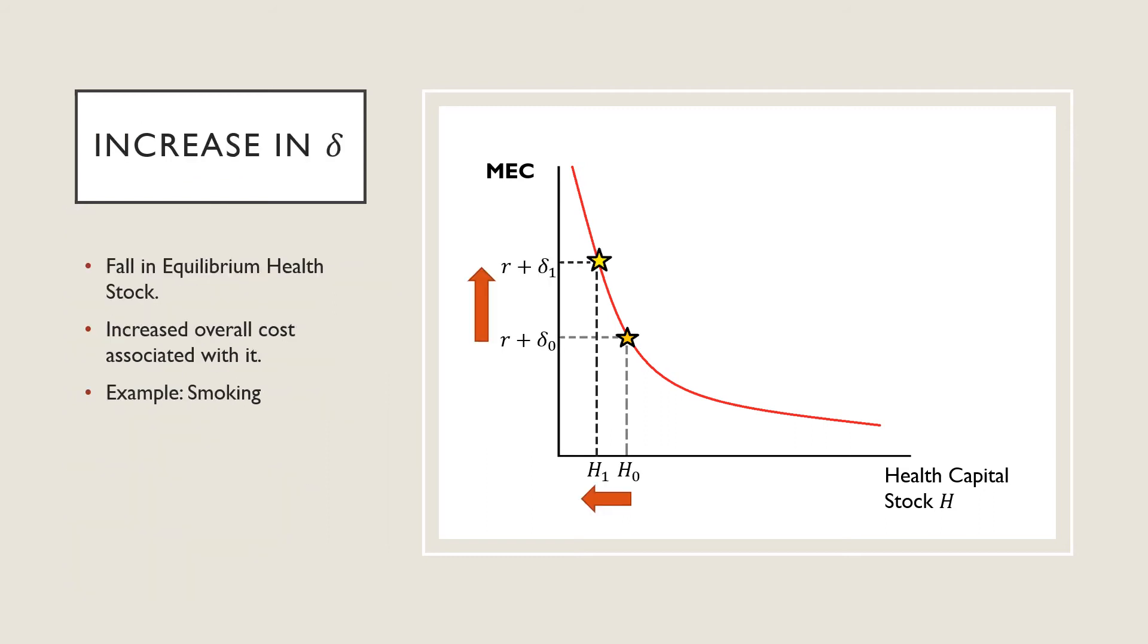So when we see an increase in delta, we should see a leftward movement along the curve from H0 to H1 with a corresponding higher cost associated with it. An example of why this may occur is if we have an individual that goes and picks up smoking that depreciates his health capital a lot quicker there.